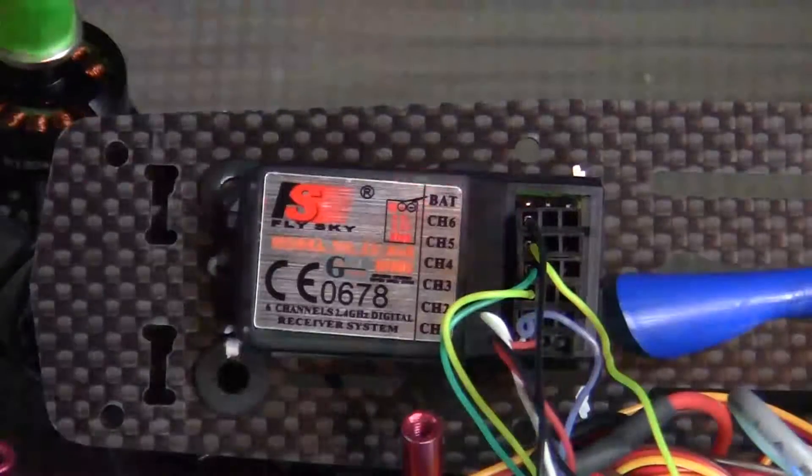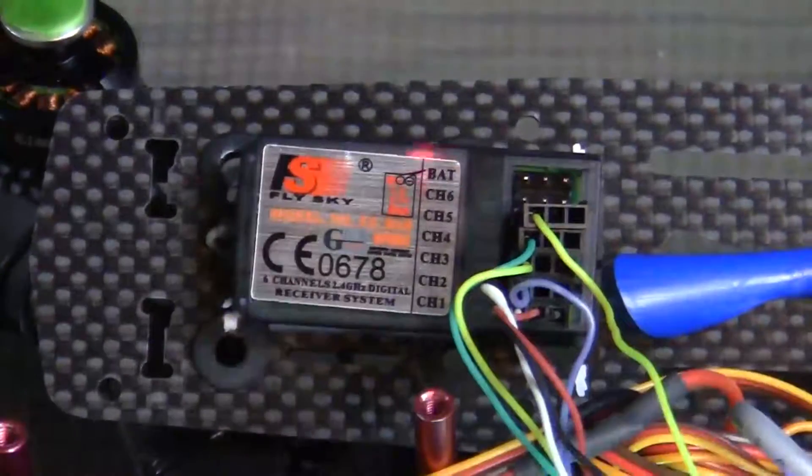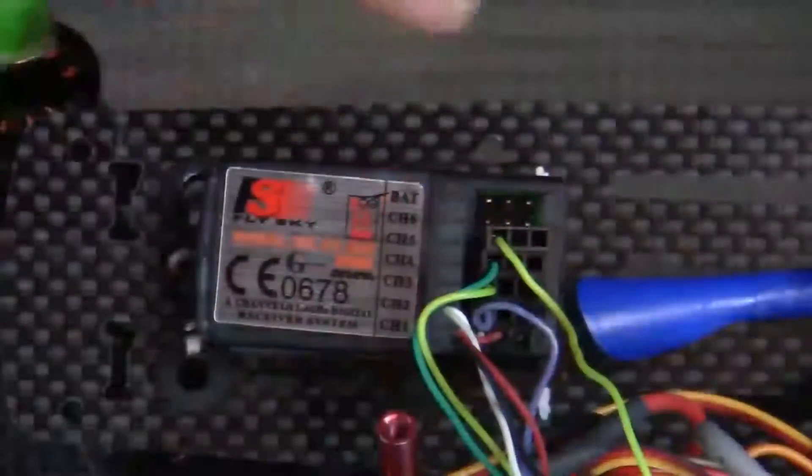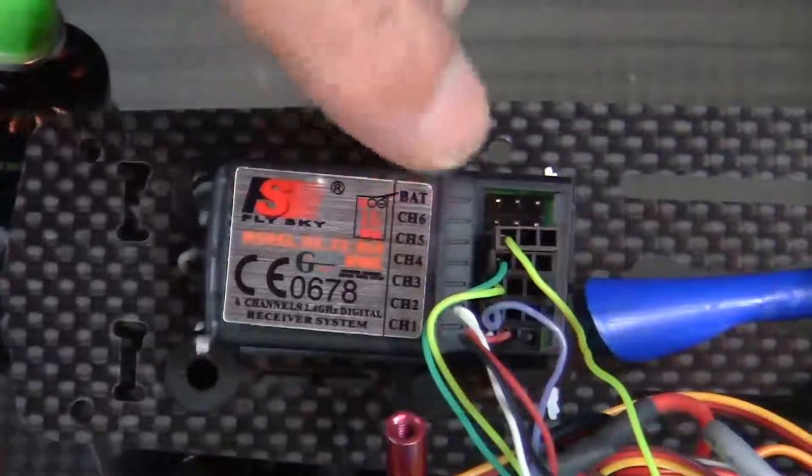In order to bind them, first we need to make room for the bind wire, so we're going to remove this wire off of channel 6. Then we're going to take our bind wire and put it on the set of pins that say BAT, like that.